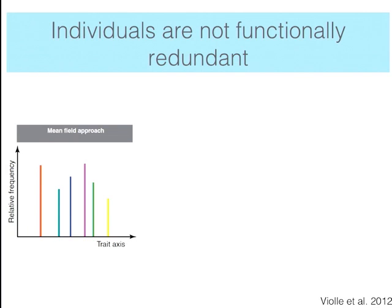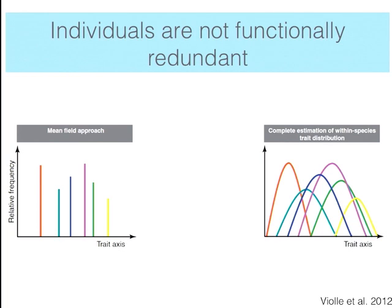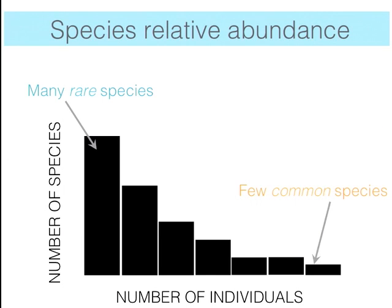Traditionally in ecology, studies using trait information have often overemphasized differences across species, using only one single mean value per species. However, we know that individuals are never identical — there is a lot of diversity at the population level. Once we start considering information at the individual level, each species is represented by a range of different values. Is this intraspecific information important for understanding general patterns in ecology, such as the species abundance distribution?